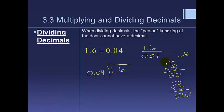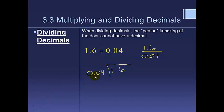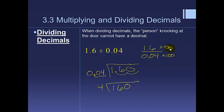To eliminate the decimal in 0.04, I need to move it two places to the right, which means multiplying by 100. If I multiply the denominator by 100, I must multiply the numerator by 100 as well. So I move the decimal in 0.04 over twice to get 4, and move the decimal in 1.6 over twice — it's an empty space, so I add a zero — getting 160. This gives us 160 ÷ 4: 4 goes into 16 four times, bringing down the 0 gives 0. The answer is 40.